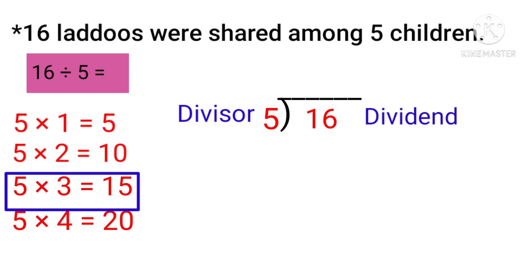And then we will write 3 here above the line. So we will subtract 15 from 16. 6 minus 5 is equal to 1, and 1 minus 1 is equal to 0. So we will write 1 here in the remainder. So 1 is a remainder.